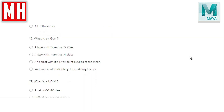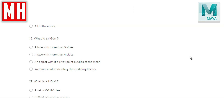Question number sixteen: what's an n-gon — is that a face with more than three sides, a face with more than four sides, an object with its pivot point outside of the mesh, or your model after deleting the modeling history? People new to 3D often struggle with this. 3D software calculates in triangles or quads — three-point and four-point faces. As soon as you go up to five or more sides, the software has a hard time understanding what's what. So an n-gon is a face with more than four sides.